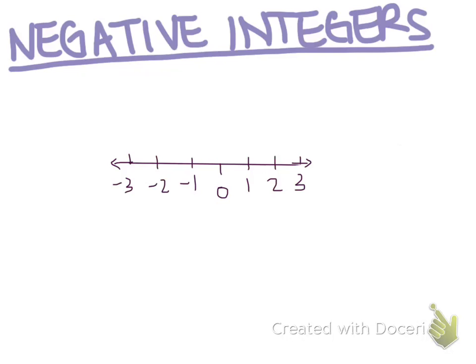On a regular number line or a horizontal number line, the negative integers are to the left of zero. These here are negative integers.